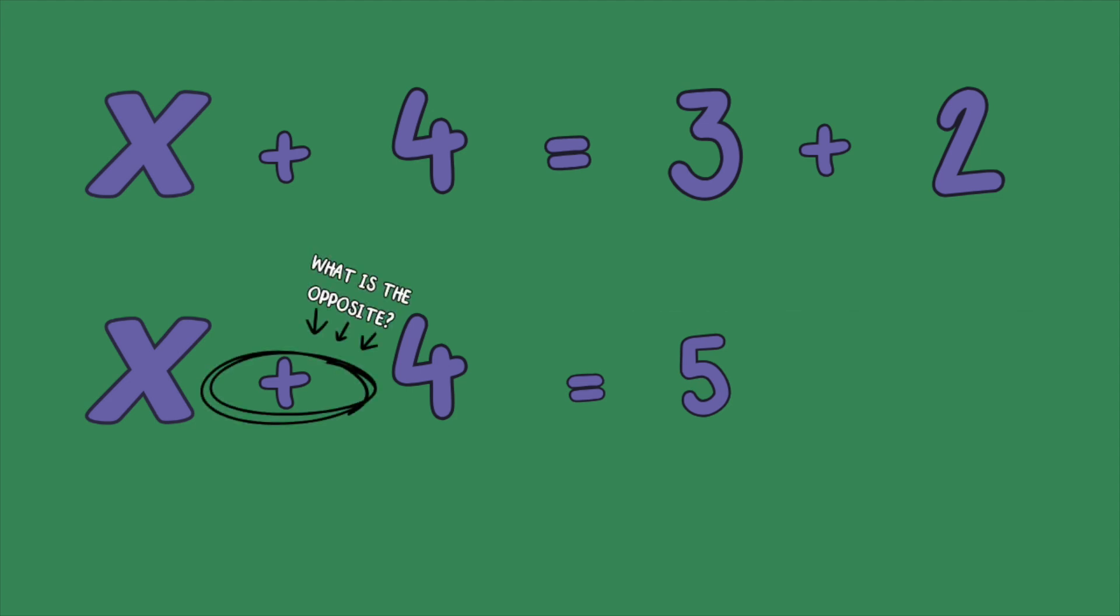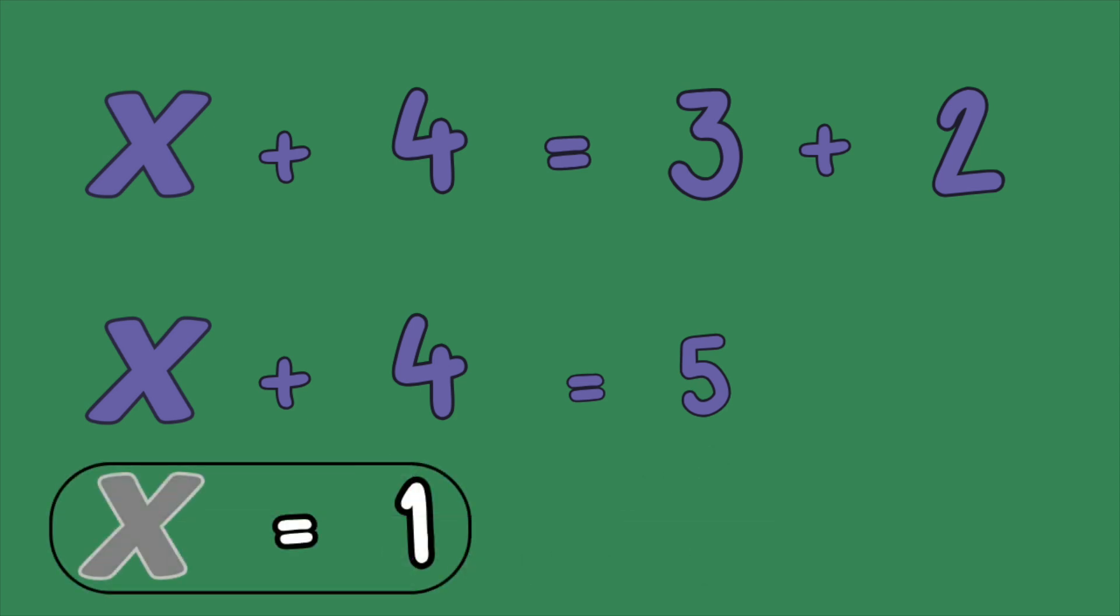What should we do next? We need to do the opposite of addition. We subtract 4 from both sides. 5 minus 4 equals 1. So x equals 1, because 1 plus 4 equals 3 plus 2.